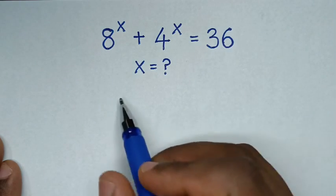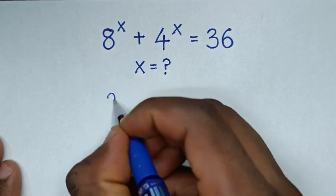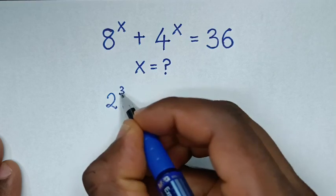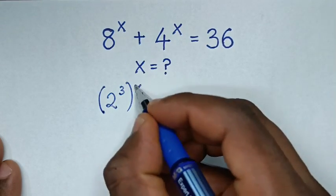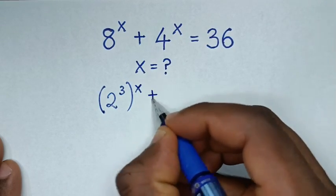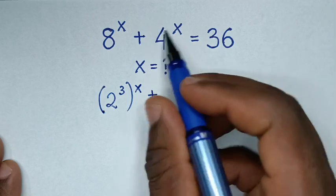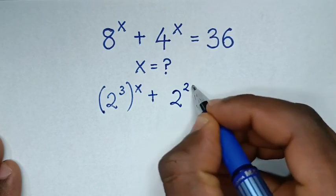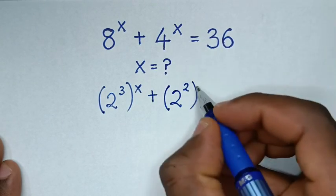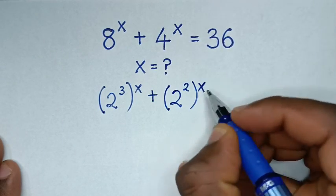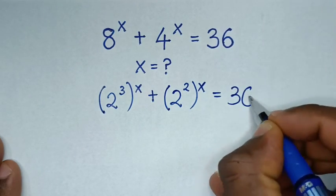From here, 8 power of x: 8 is the same as 2 power of 3, then bracket this power of x. Then plus 4 power of x: 4 is the same as 2 power of 2, then bracket this power of x, is equal to 36.